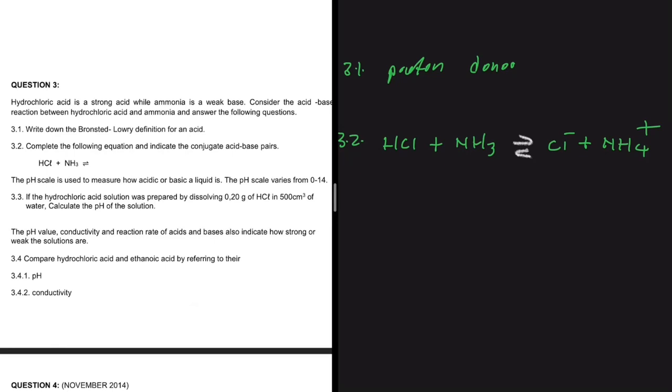But we need to do more than that. We now need to indicate our conjugate acid-base pairs. So we have HCl here, and then after it's reacted, we are left with Cl⁻. So HCl is the acid and Cl⁻ is our conjugate base.